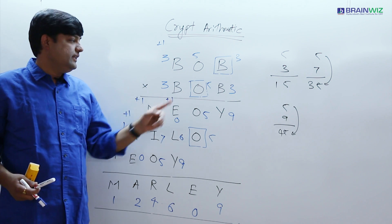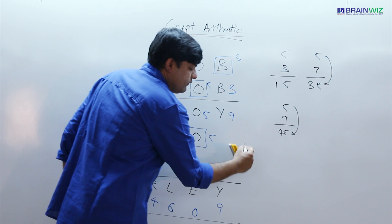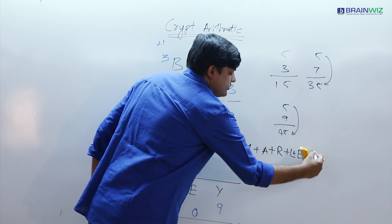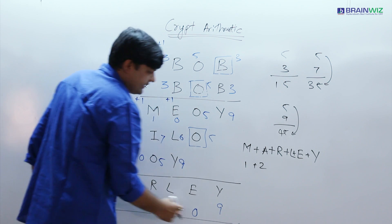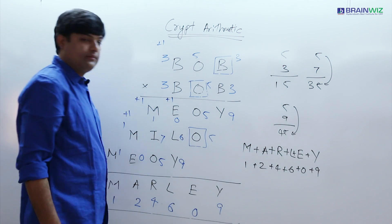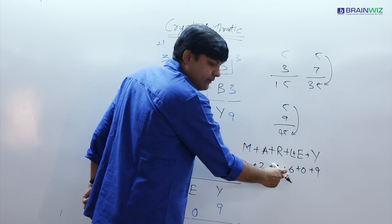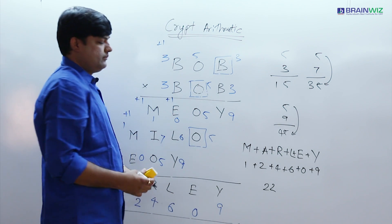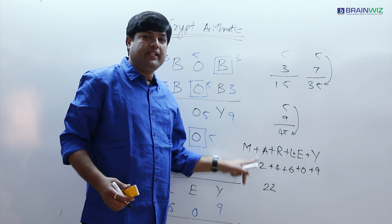The basic hint of the question is O multiplied with B gives O back. The question asks for the value of M + A + R + L + E + Y, that is the MARLEY sum. We have M = 1, next is 2, then 4, then L = 6, then E = 0, then Y = 9. Adding these: 1 + 2 + 4 + 6 + 0 + 9 = 22. So the sum of all the values of MARLEY is 22.